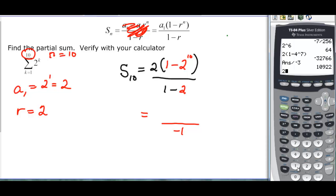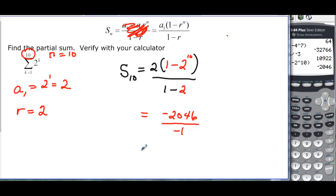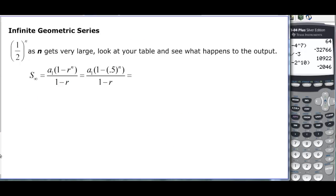So 2 parenthesis 1 minus my 2 carat 10, and I get negative 2,046. And divided by negative 1 would be a positive 2,046. So summing up the first 10 terms of that formula, 2 to the k, would be 2,046.